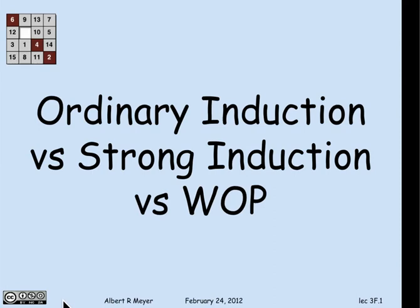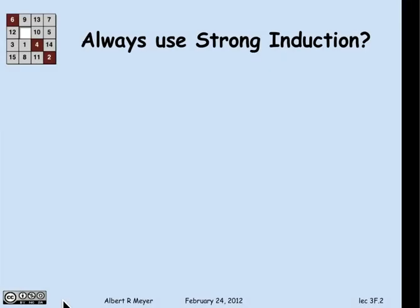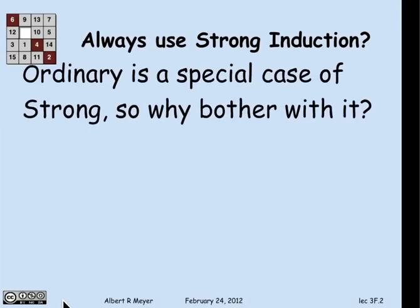People have consistently asked how they choose which method of proof to use among ordinary induction, strong induction, or well-ordering. The answer is that it's hard to tell them apart, because in an easy technical sense, they're really all equivalent. First of all, it's clear that ordinary induction is a special case of strong induction.